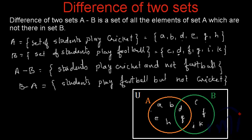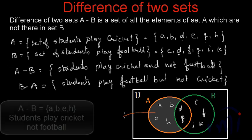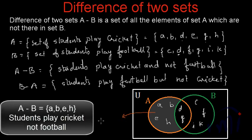Set A minus B, as per the definition, will be all the elements of set A which are not in set B. That means A minus B actually represents this area — the list of students who play cricket but do not like to play football.